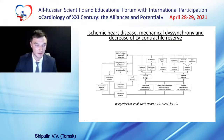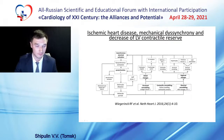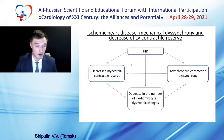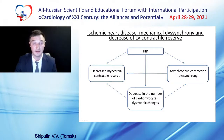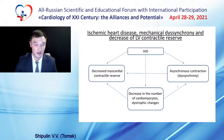Here you can see one of the pathogenic pathways of contractile reserve decrease. In simplified form, ischemic heart disease causes decrease in contractile reserve directly by reducing oxygen supply to the myocardium, and indirectly by the formation of fibrotic changes and a decreasing number of functioning cardiomyocytes — consequences of myocardial infarction — that can lead to decreased contractile function directly and indirectly through the occurrence of dyssynchrony and fibrosis.